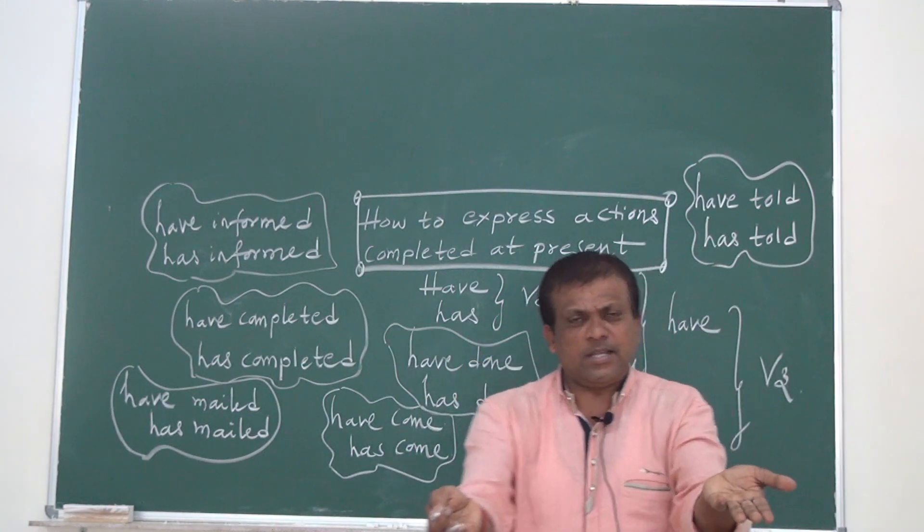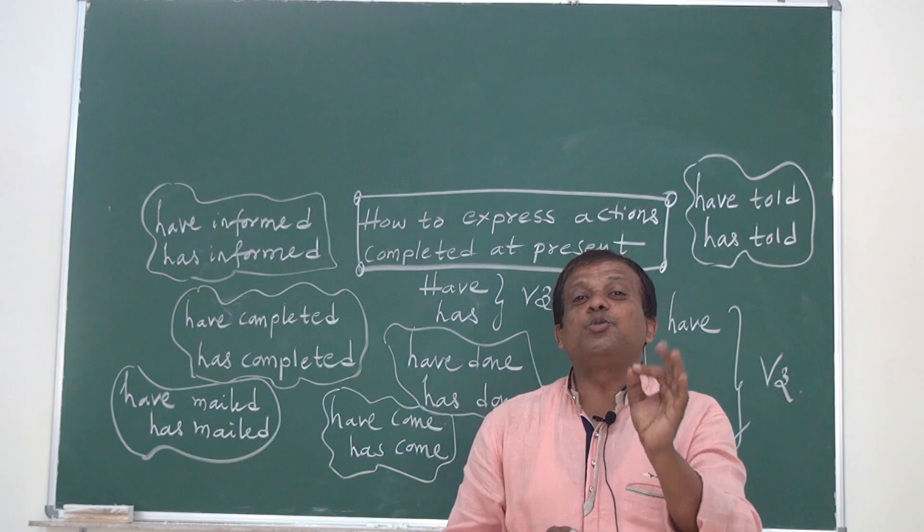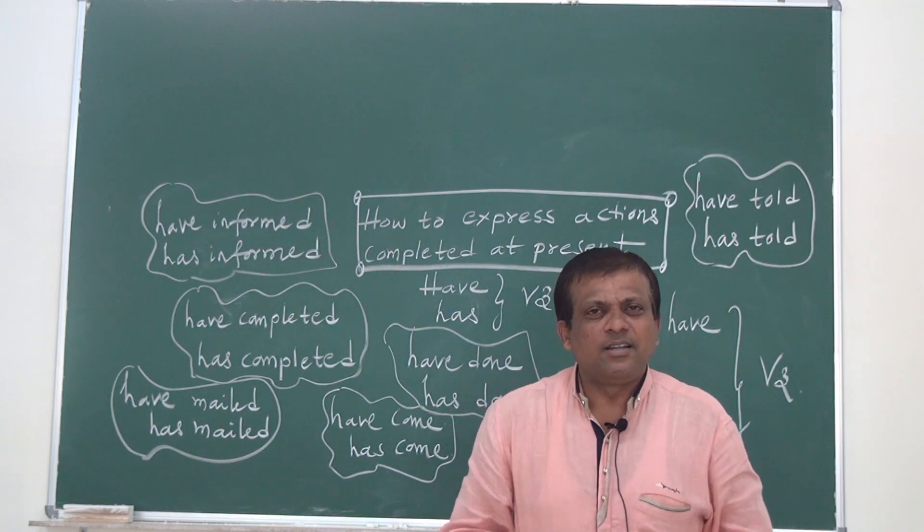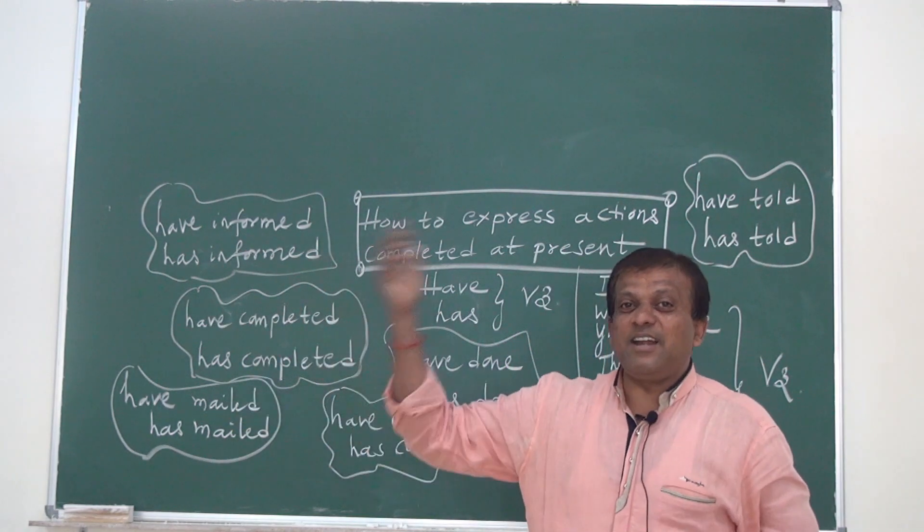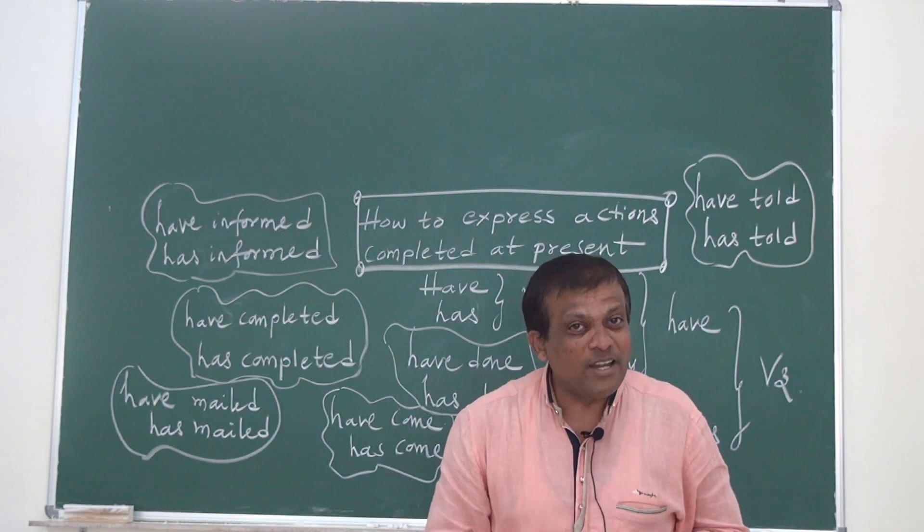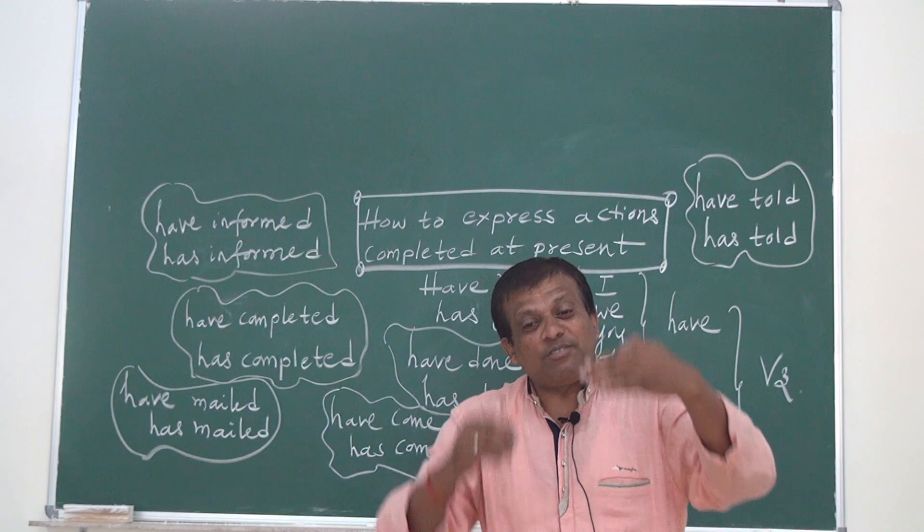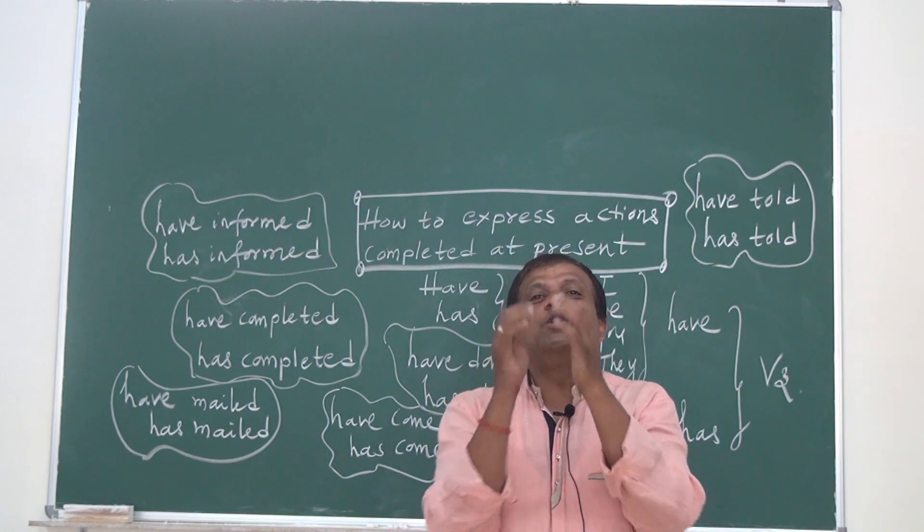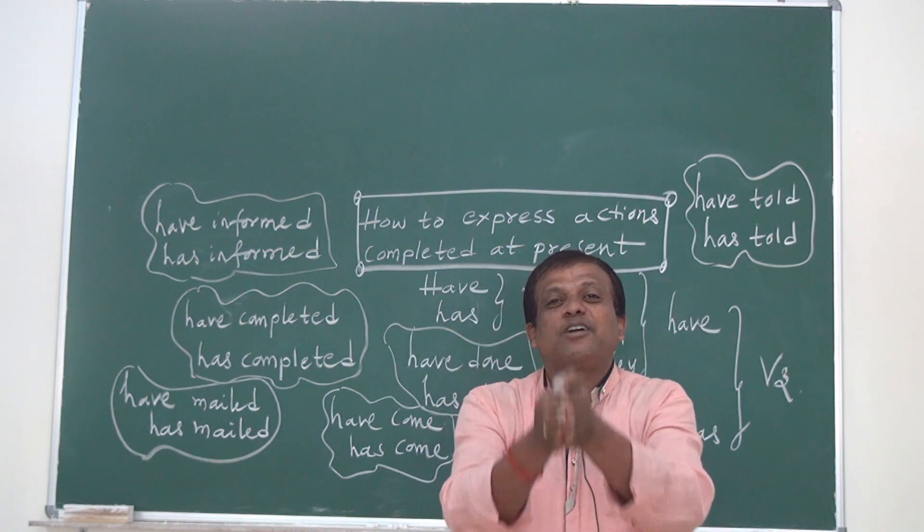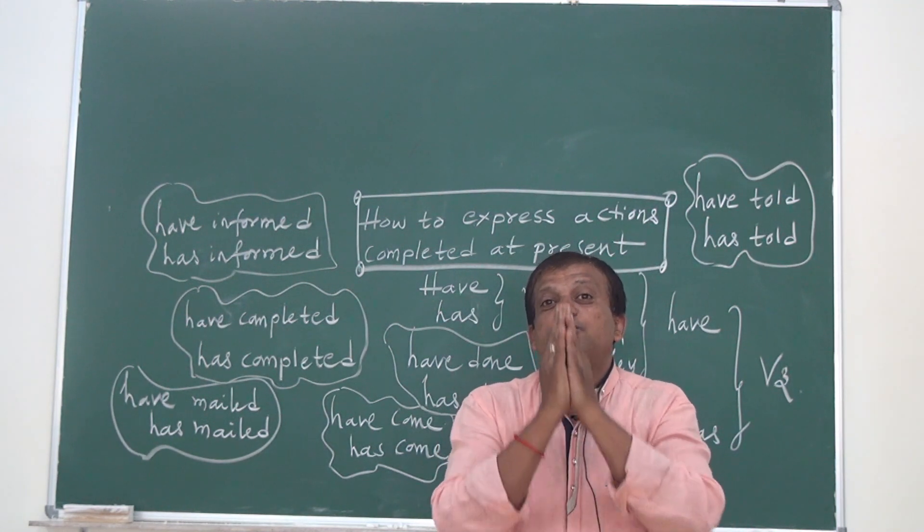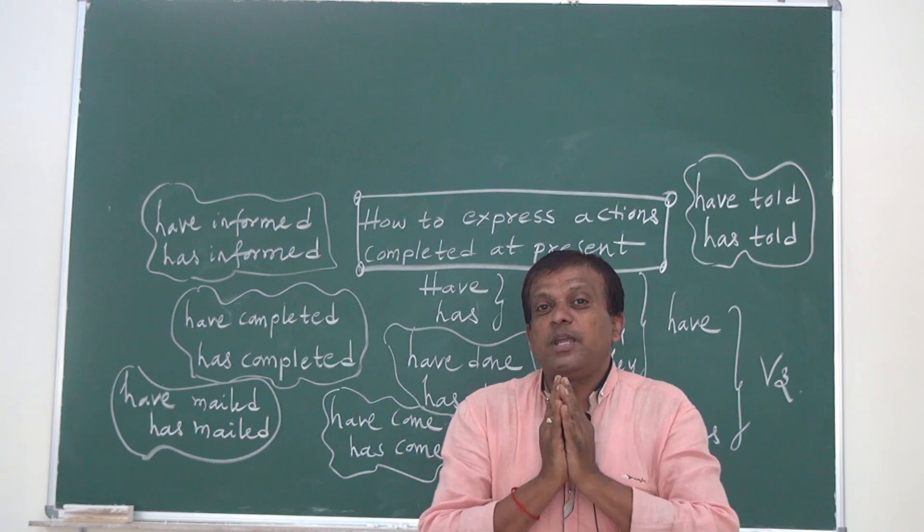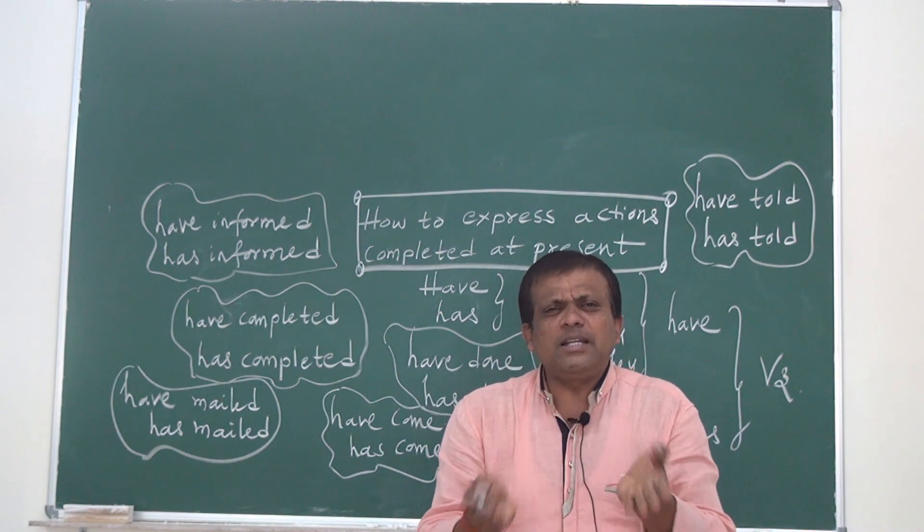Some examples we can see. For example, today, I have eaten dosa for the breakfast. She has eaten uppit too. He has eaten idli and vada. Are you getting the point? So, whatever you have completed at present, you will use. I have done. I have completed. I have participated. I have submitted. She has gone. She has come. She has told me. She has invited. Something like this.